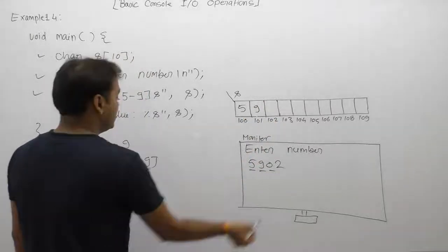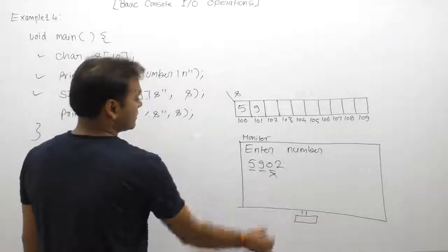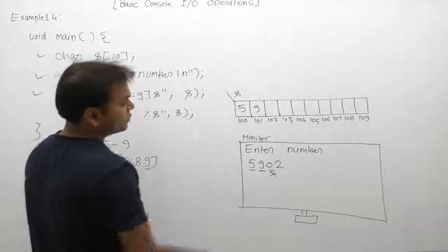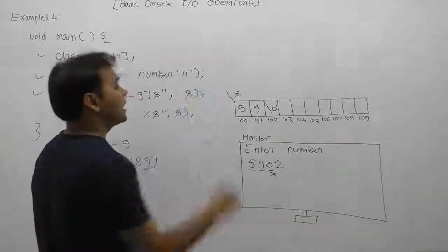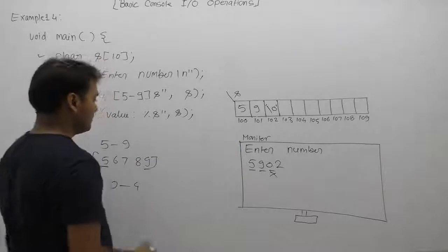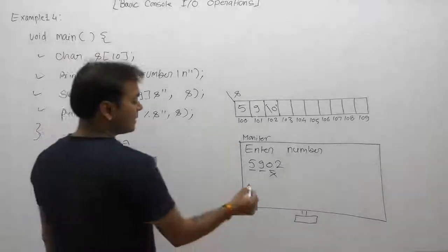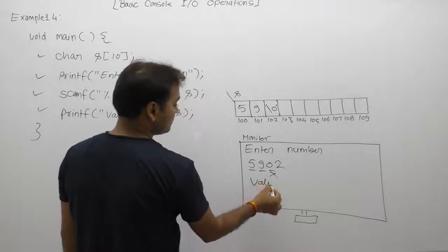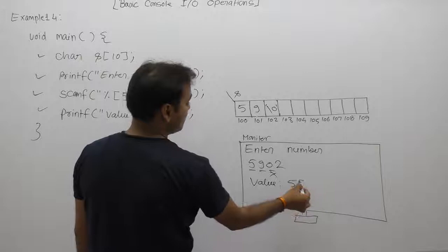Then we have 0. Zero is not part of the given regular expression, therefore it is never stored inside this array and the read operation will be stopped here. Then the last character is assigned as null. Next, we use printf to display the value of 's'. The value of 's' is 59.